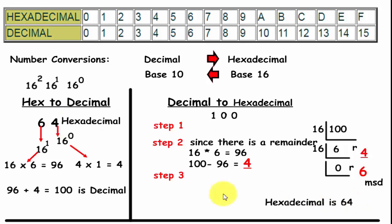64 is the hexadecimal. 100 was the decimal. Let's look at another example.